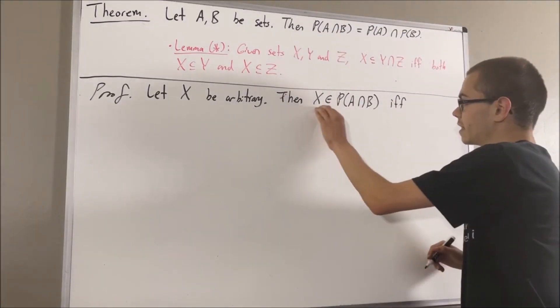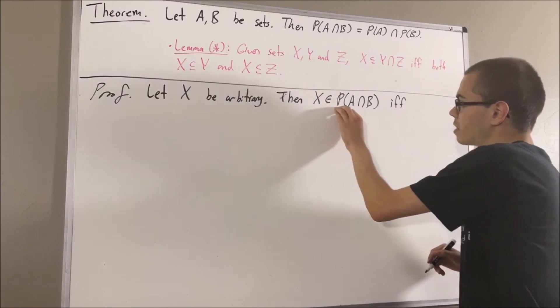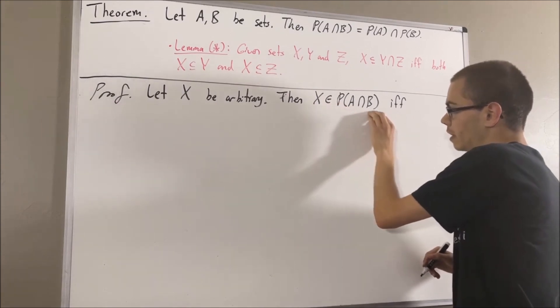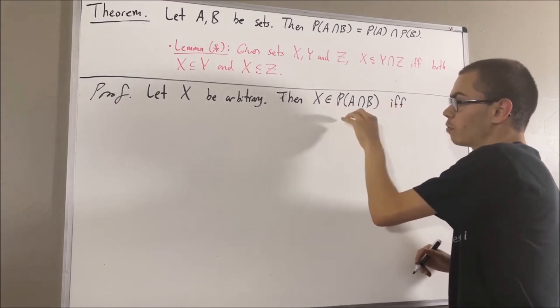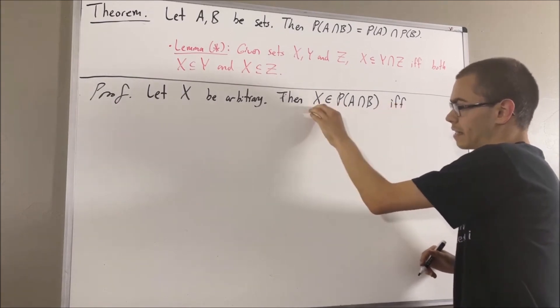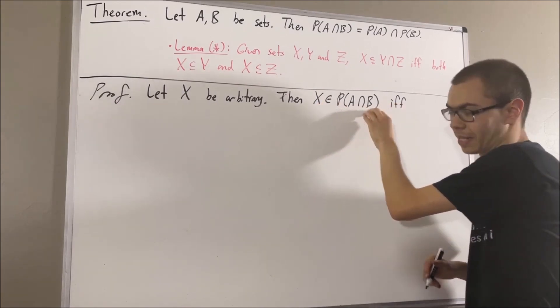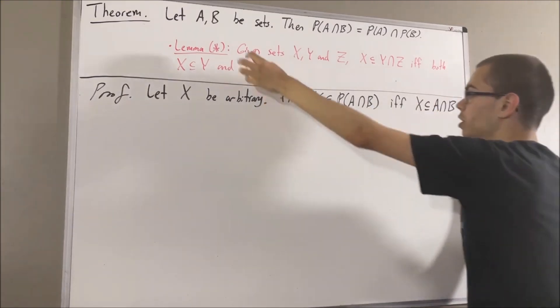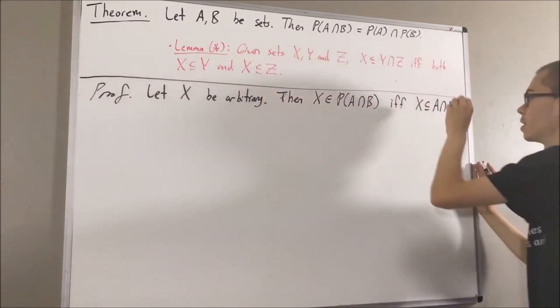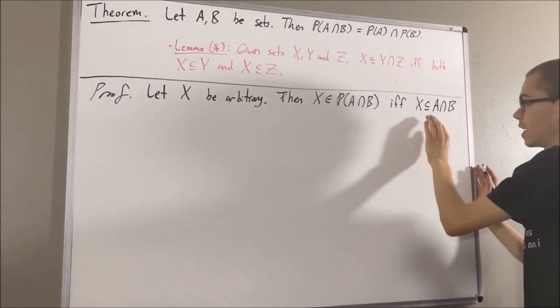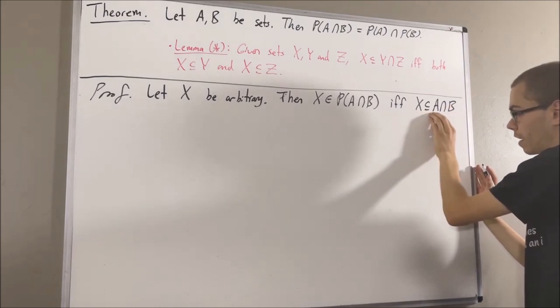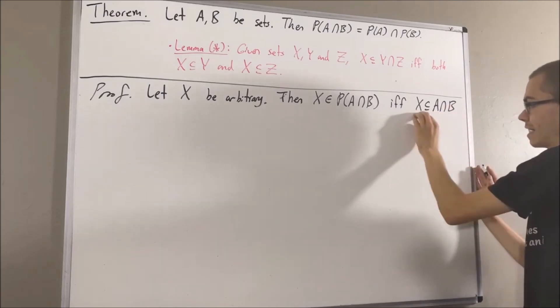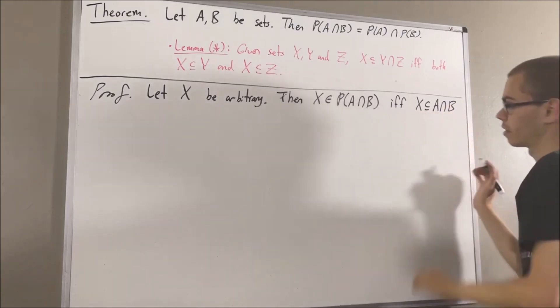To say that X is an element of the power set of A and B is equivalent to saying X is a subset of A and B. But then we can use our lemma to say that this is equivalent to saying X is a subset of A and X is a subset of B.